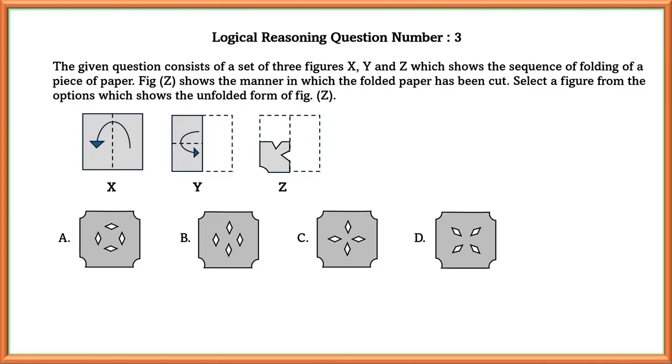Logical reasoning question number 3. The given question consists of a set of 3 figures X, Y and Z which show the sequence of folding of a piece of paper. Figure Z shows the manner in which the folded paper has been cut.